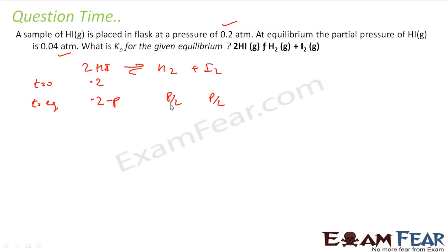Because one mole, if you subtract 2p from here, it will be p and p. I'm doing minus p here to become p by 2 and p by 2. So at equilibrium, the partial pressure of H2, not HI, was 0.04 atm.